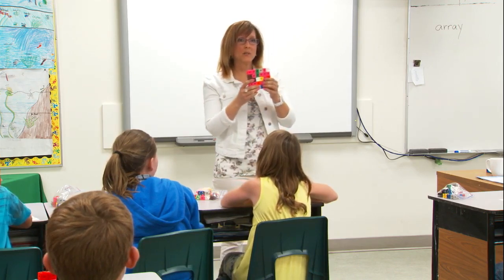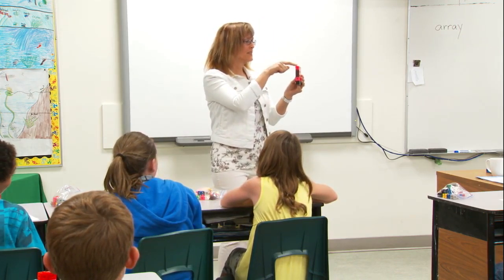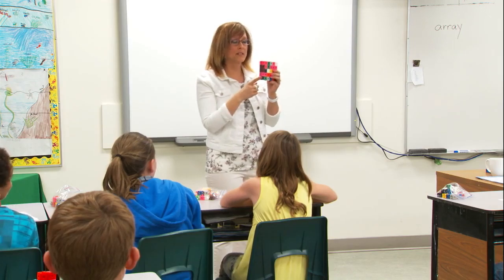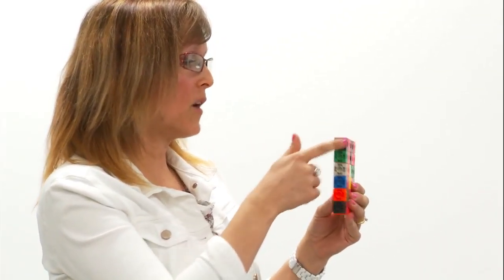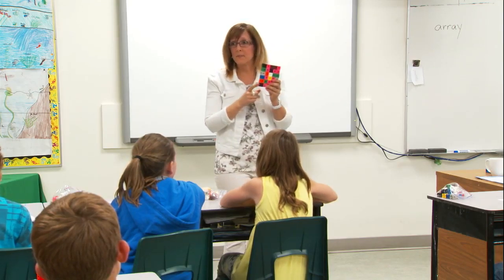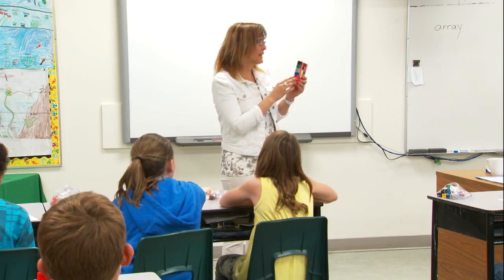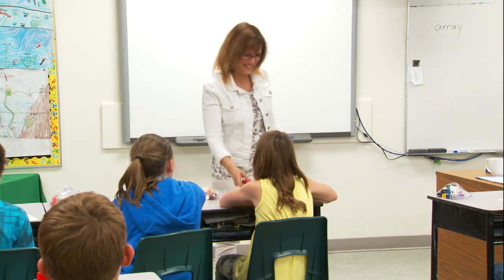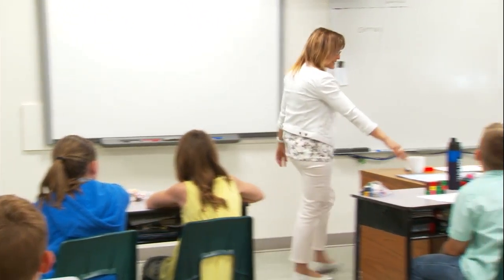So you can see in her array she built one that has six columns and five rows. Now if I took this array and I turned it this way I would now have five columns and six rows but still 30 blocks. So it doesn't matter in what way we have the numbers written, we're gonna get the same answer. This is called the commutative property of multiplication.